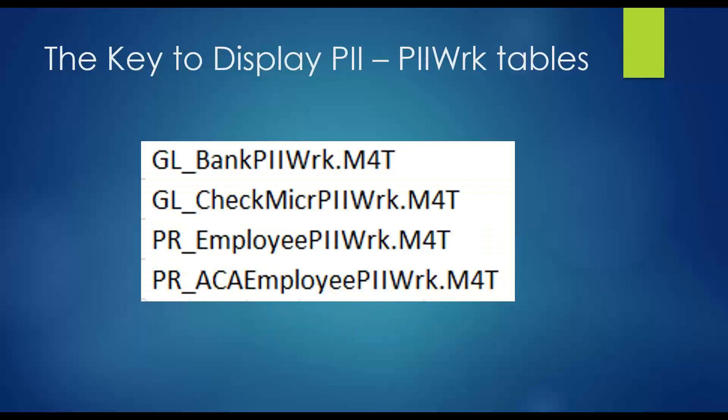The key to displaying this data involves work tables. Notice they all have 'PII' in them and they all end in 'WRK' — which just stands for work. The PII flag identifies them as PII-related tables. Those are the four key tables you're going to want to remember, and that's what we're going to use to get to the information that is encrypted.